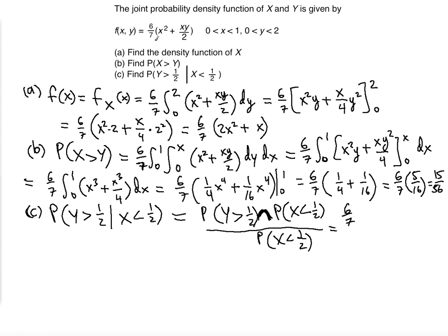The 6/7 stays outside. For the numerator, y exceeds 1/2, so the lower limit for the y integral is 1/2 and the upper is 2, as given. The integrand is x² + xy/2. Since x is less than 1/2, x goes from 0 to 1/2. The order is dx dy, meaning x is the inner integral from 0 to 1/2, and y is the outer integral from 1/2 to 2.